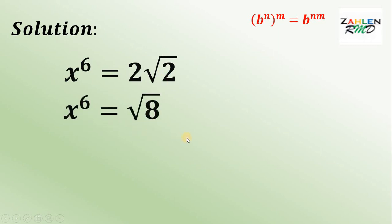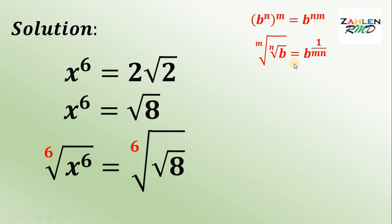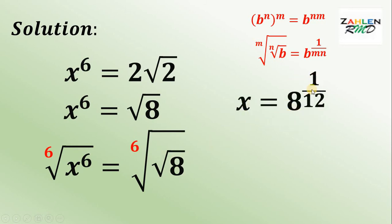At this point, we need to solve for the value of x. To do that, we get the 6th root of both sides. The 6th root of x raised to the 6th power gives us x, and on the right-hand side we have the 6th root of square root of 8. We use another law of exponents: the mth root of the nth root of b equals b raised to 1 over m times n. In our case, the index of the square root is 2, so we have x equals 8 raised to 1 over 12, or simply 6 times 2.